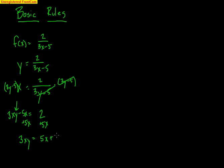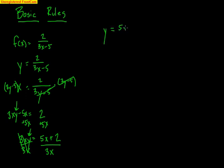You could do 2 plus 5x, it doesn't really matter, but I'll put 5x plus 2. And lastly, I'm trying to get this y by itself, so if I divide both sides by 3x, the 3x's cancel out and I get a 3x over here as well, so what happens is I end up with y equals (5x plus 2) all over 3x.